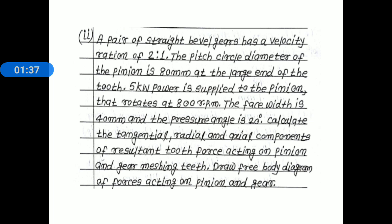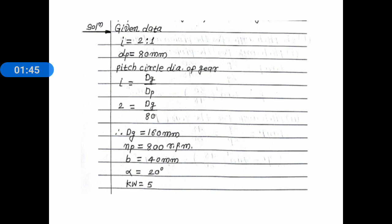Now let us collect the given data. Velocity ratio, denoted by letter i, is 2 is to 1. Pitch circle diameter of the pinion, denoted by capital D sub xp, is 80 millimeters. Note carefully that it is denoted by capital D sub xp.